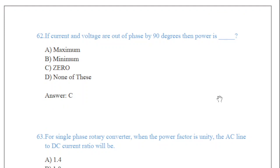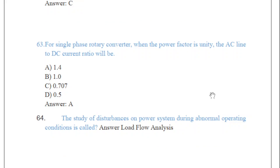Question 62: if current and voltage are out of phase by 90 degrees, then power is zero — C is the correct answer. Question 63: for a single-phase rotary converter, when the power factor is unity, the AC line to DC current ratio will be 1.4. Question 64, the last question: the study of disturbances on a power system during normal operating condition is called load flow analysis, so the answer is load flow analysis.